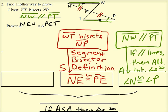And that tells me that alternate interior angles are congruent. Well, angle W and angle T are also alternate interior angles, so we could use that information for the proof as well.